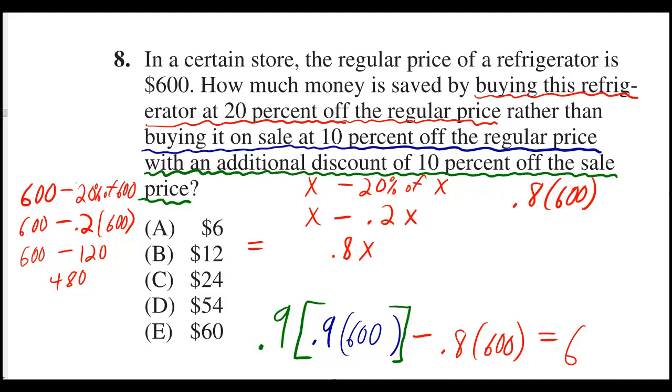You could do it this way. You could say we're taking 600 and we're losing 20%. 20% is the same as .2. If you multiply .2 times 600, you get 120, and you subtract that from 600 and you get 480.